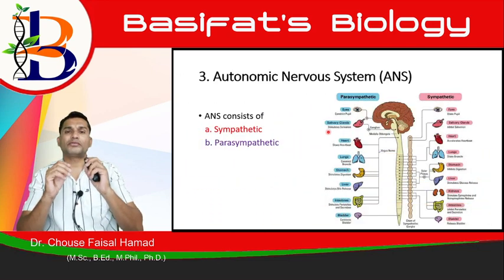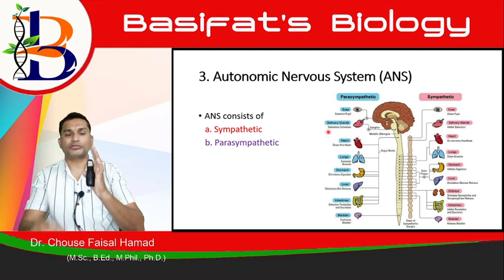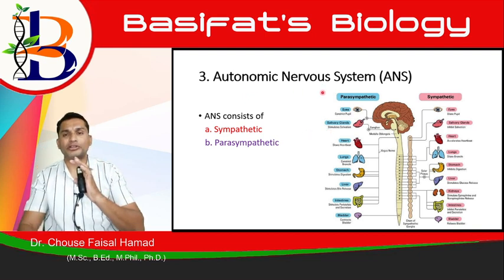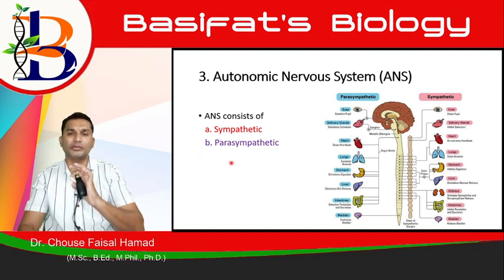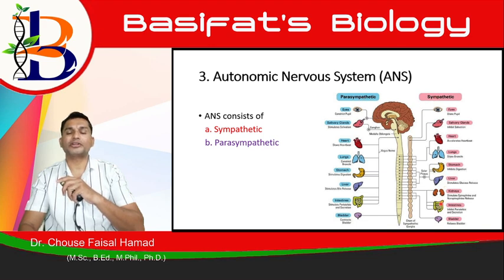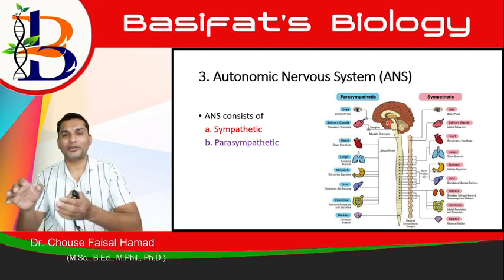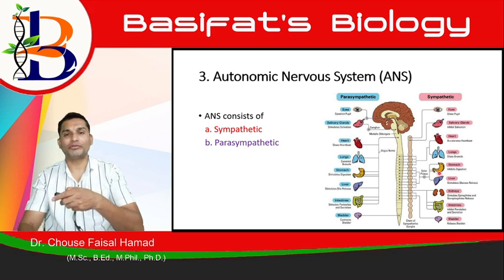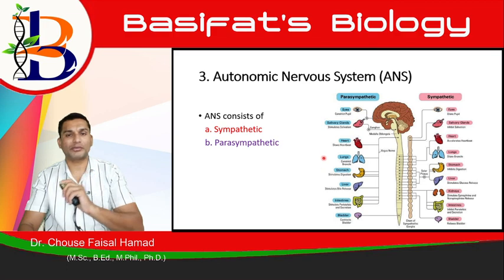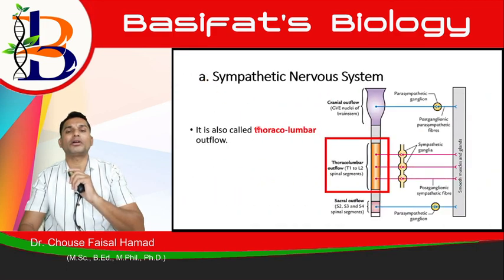This is the basic formation of the autonomic nervous system. It has two sub-components: one is the sympathetic nervous system and the second is the parasympathetic nervous system. The sympathetic nervous system is also known as the thoracolumbar outflow.